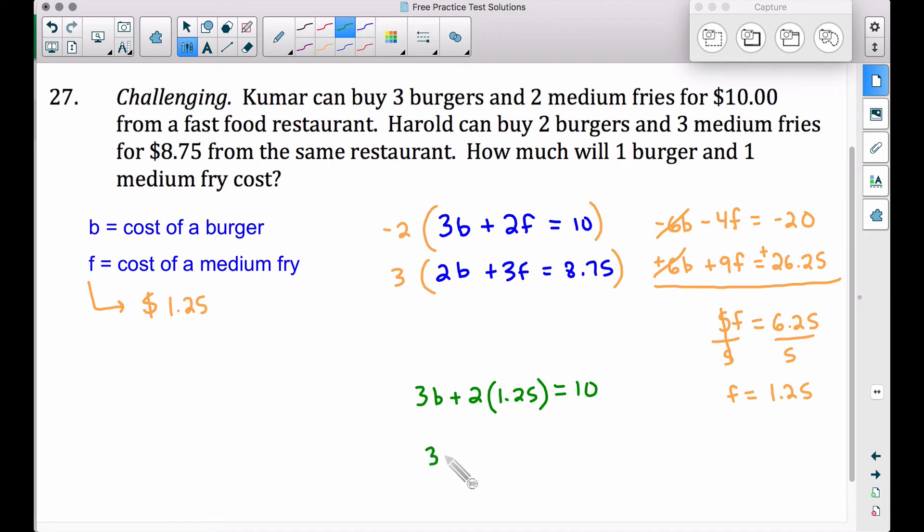So think about this. Three burgers plus two medium fries, if one medium fry costs $1.25, two medium fries will cost $2.50. This is equal to 10 bucks.